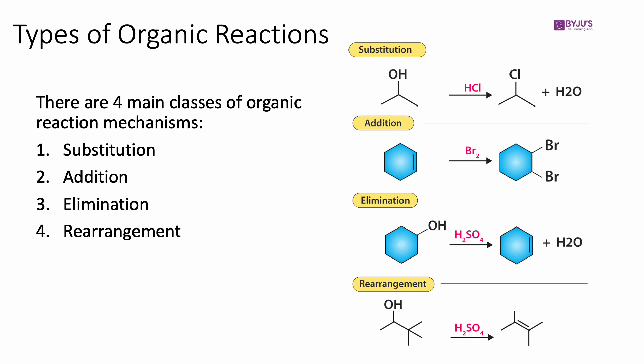A rearrangement reaction is one where one group on a molecule moves to another part of the molecule. The carbon on the right has three methyl groups attached to it on the reactant side, but on the product side there are two methyl groups on that carbon because one methyl group has migrated next door — so that molecule has rearranged.